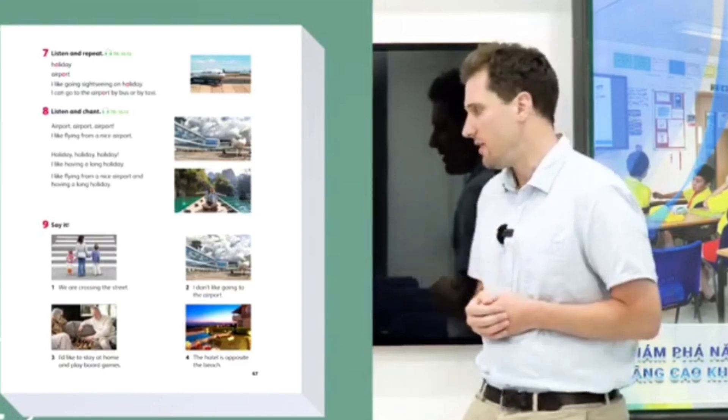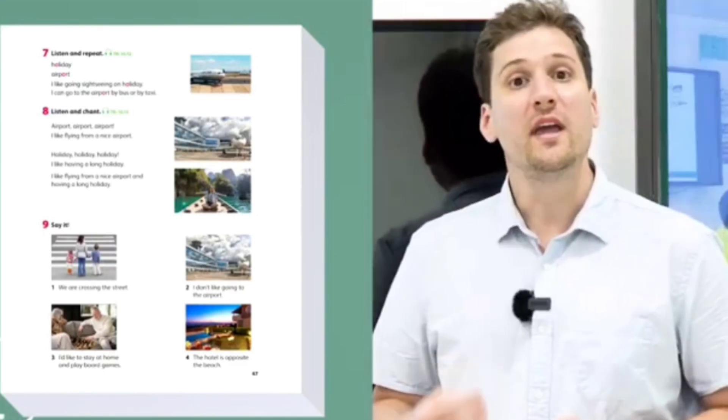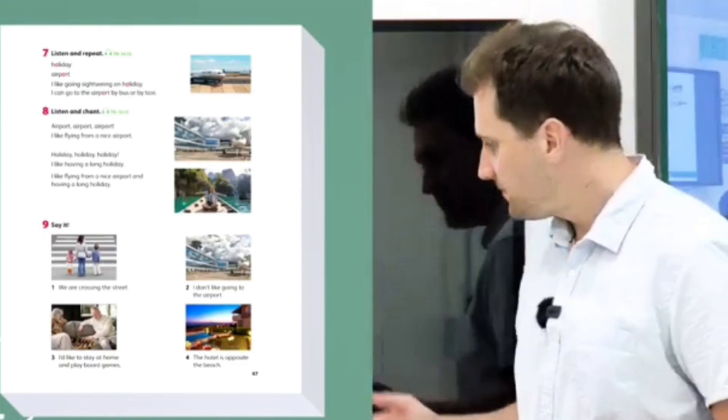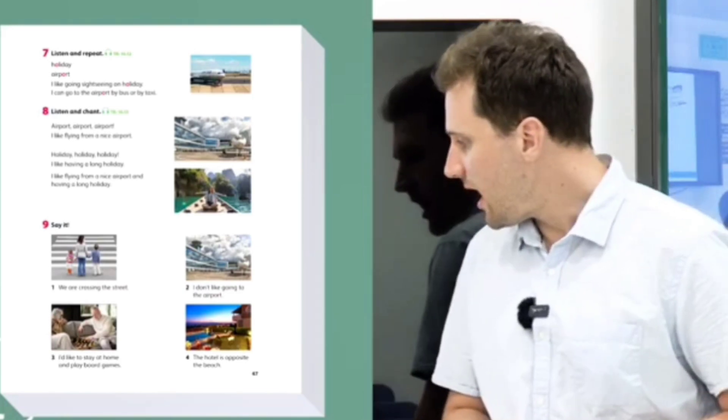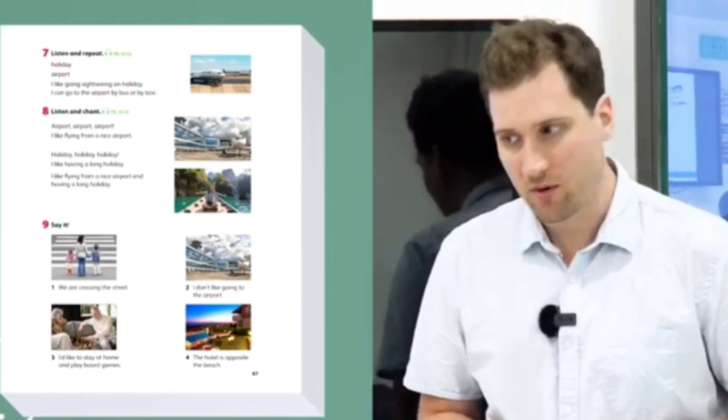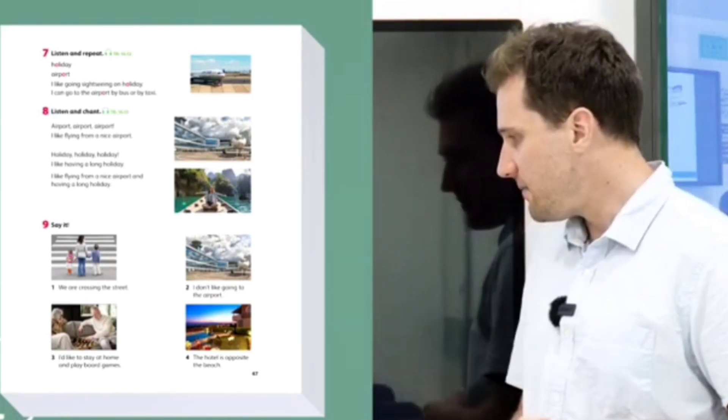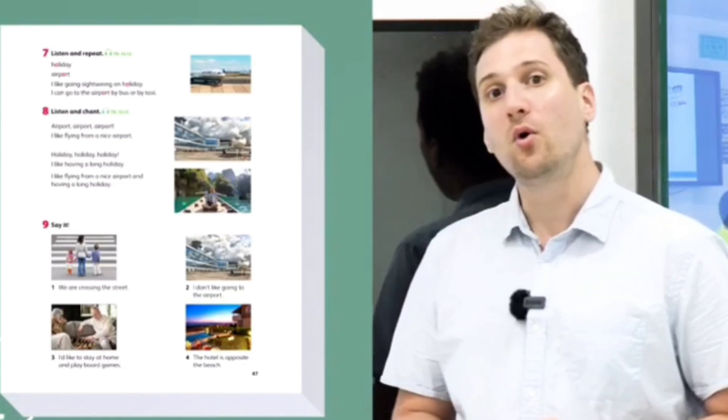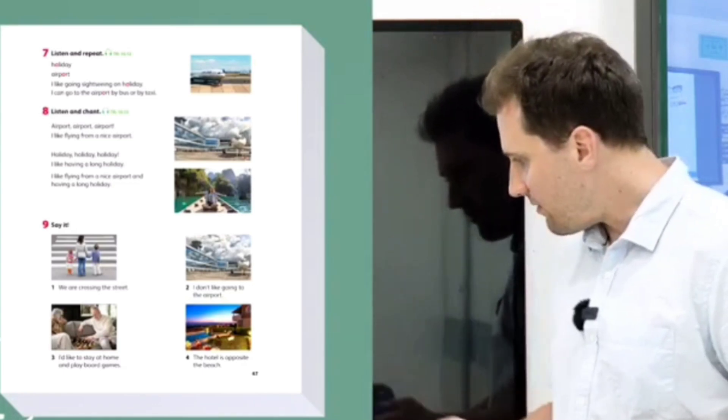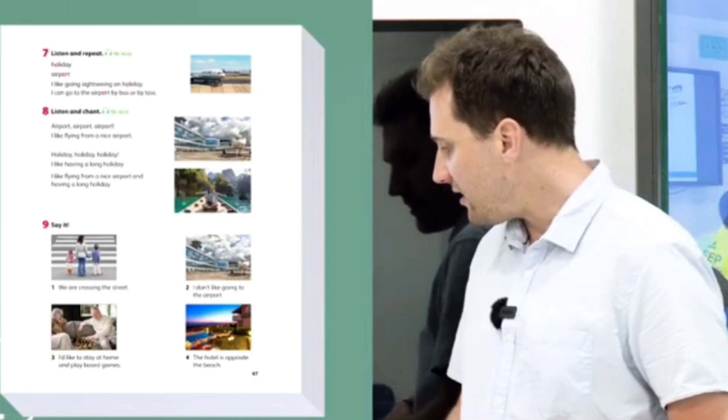So sentence number one: we are crossing the streets. Number two: I don't like going to the airport. Number three: I'd like to stay at home and play board games. Number four: the hotel is opposite the beach.